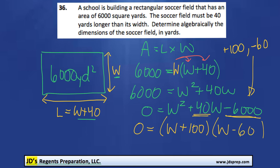And that means W is going to equal negative 100 here, and W will equal 60. But because we are talking about the width of a soccer field, we can't have a negative distance. So we're going to ignore this negative 100 value and just stick with the 60.